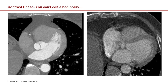Before we start talking about editing, I want to talk about contrast phase. You can't edit a bad bolus. I've got an example of a bolus that's correct where all the contrast has been injected and it's on the left-hand side — going through the aorta and out into the coronary arteries and the descending aorta. There's no contrast in the pulmonary arteries, just in the pulmonary veins.